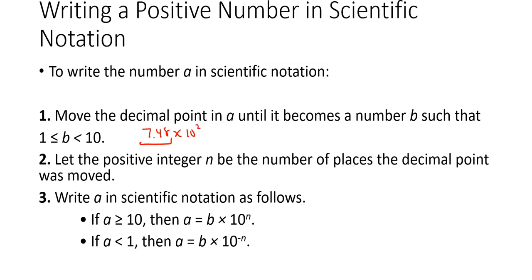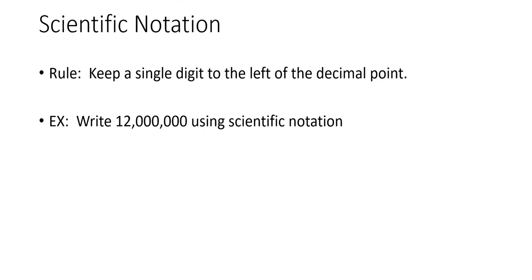This is something I took from the book. The rule is keep a single digit to the left of the decimal point. So here's a number, 12 million. Write it using scientific notation. What do we want? We want one number before the decimal point. So 1.2 times 10 to what power? I'm going to take the decimal point that was between the 1 and 2 and move it to the right one, two, three, four, five, six, seven places. That's my exponent. So if I'm going to the right, it's going to be a positive exponent.